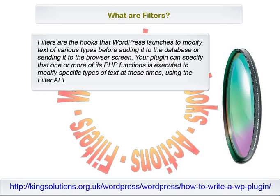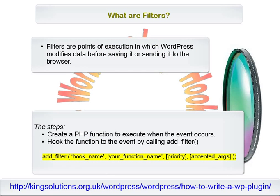What are filters? WordPress states: filters are the hooks that WordPress launches to modify text of various types before adding it to the database or sending it to the browser screen. Your plugin can specify that one or more of its PHP functions is executed to modify specific types of text at these times using the Filter API. The basic steps are: create a PHP function to execute when the event occurs, then hook the function to the event by calling AddFilter.